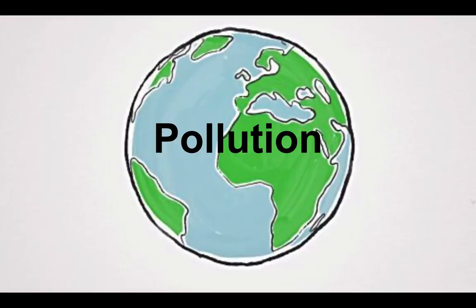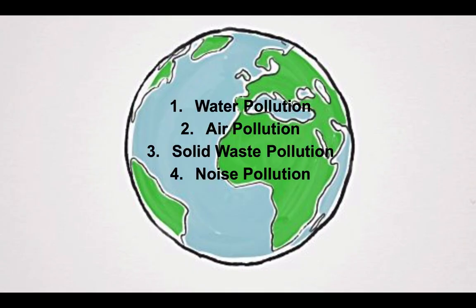Now let's discuss pollution. It's the contamination of a natural environment that causes a harmful changing effect. The sources of pollution, or the pollutants, can come from a man-made occurrence or naturally occurring contaminants. The four types of pollution are water pollution, air pollution, solid waste pollution, and noise pollution.